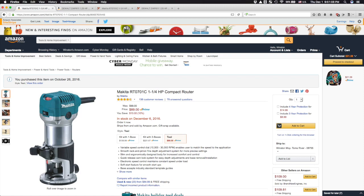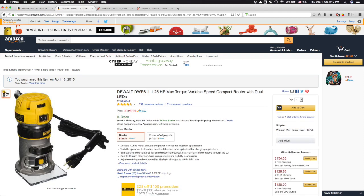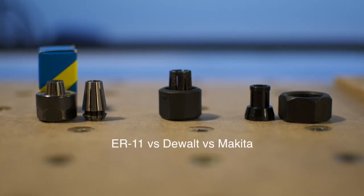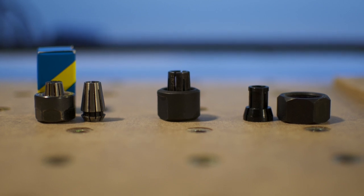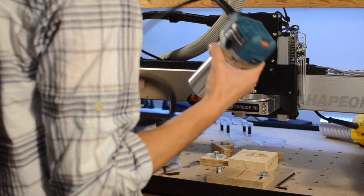Both use a 1.25hp variable speed motor with closed loop control, and both take ¼ inch bits in proprietary collets. If you're just checking boxes, these two are very similar options.